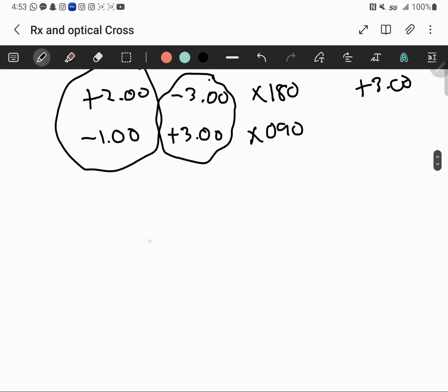If you get any Rx like plus 3 and plus 5 axis 120, this is 90 degrees away, so it's then 30.